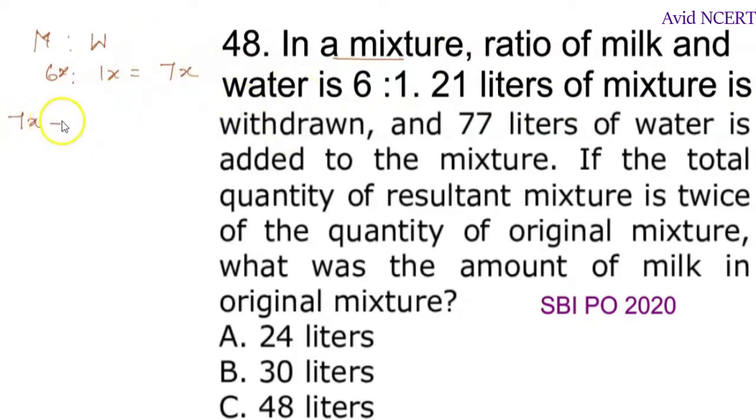Which is minus 21, and 77 liters of water is added to the mixture, plus 77 liters of water is added. If the total quantity of resultant mixture, so whatever the quantity of this mixture is, is equal to twice the quantity of original mixture, twice that is 2 times the original mixture, that is 7x.